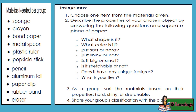Instructions: 1. Choose one item from the materials given. 2. Describe the properties of your chosen object by answering: What shape is it? What color is it? Is it soft or hard? Is it shiny or not? Is it big or small? Is it stretchable or not? Does it have any unique features? What is your item? 3. As a group, sort the materials based on their properties — hard, shiny, or stretchable. 4. Share your group's classification with the class.